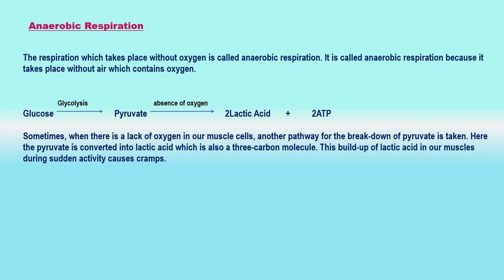A few organisms such as yeast, plants, and certain bacteria can obtain energy from food in the absence of oxygen by the process of anaerobic respiration. Anaerobic respiration takes place in our muscles during vigorous physical exercise when oxygen gets used up faster in the muscle cells than can be supplied by the blood. When anaerobic respiration takes place in human muscles, glucose is converted into lactic acid with the release of a small amount of energy. The sudden build-up of lactic acid in our muscles during vigorous physical activity can cause muscular cramps.